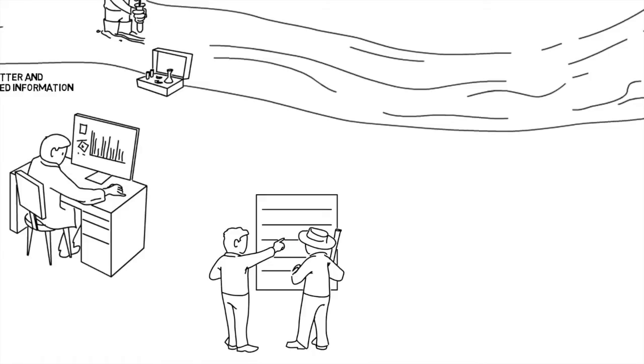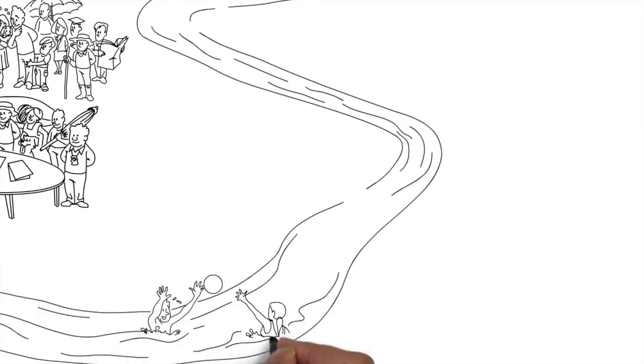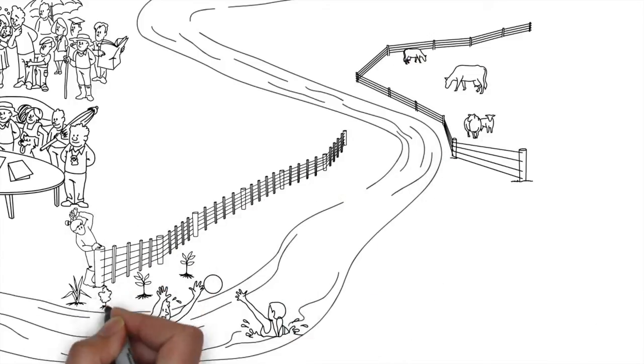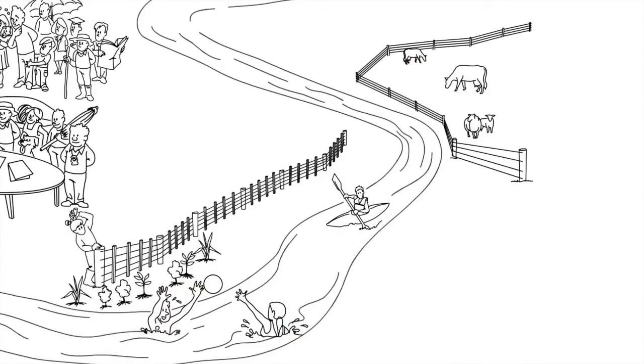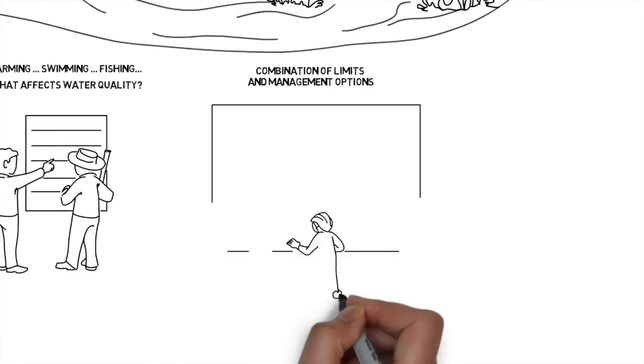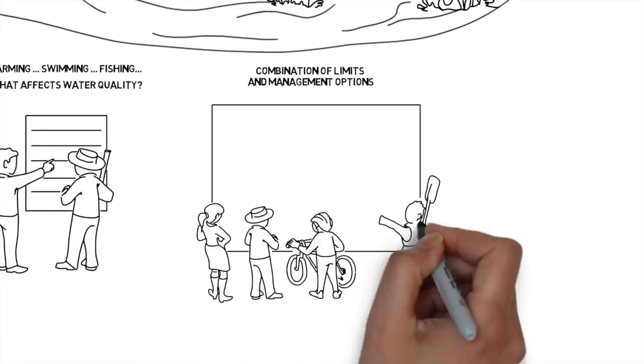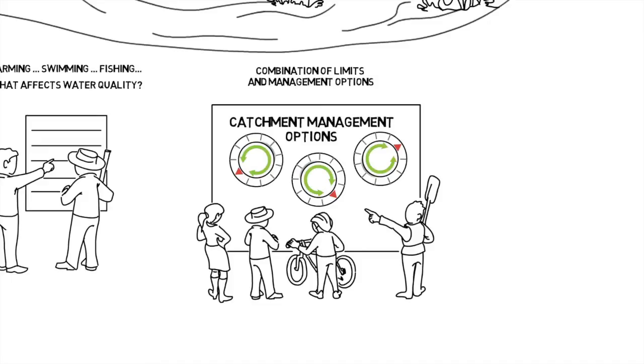Thinking about the places you want water to be available for farming or swimming or fishing, you'll need to look at the things that affect water quality. For example, E.coli levels have to be low if you want to swim. That might mean upgrading sewage treatment or requiring fencing and planting along riverbanks. Or, you might look at a combination of limits and management options, like stricter controls on discharge consents and fencing off stock.